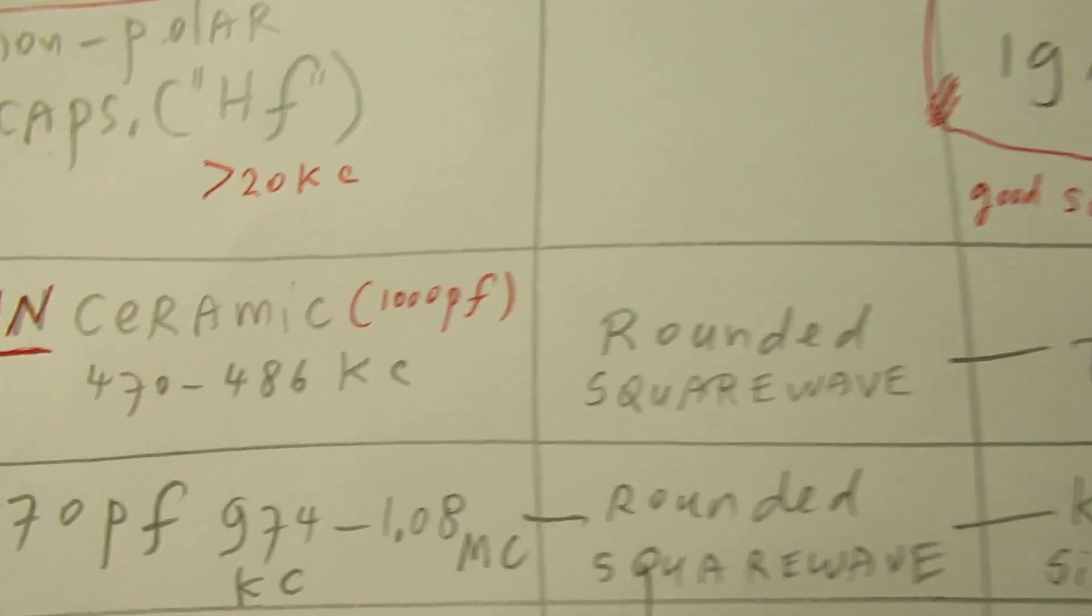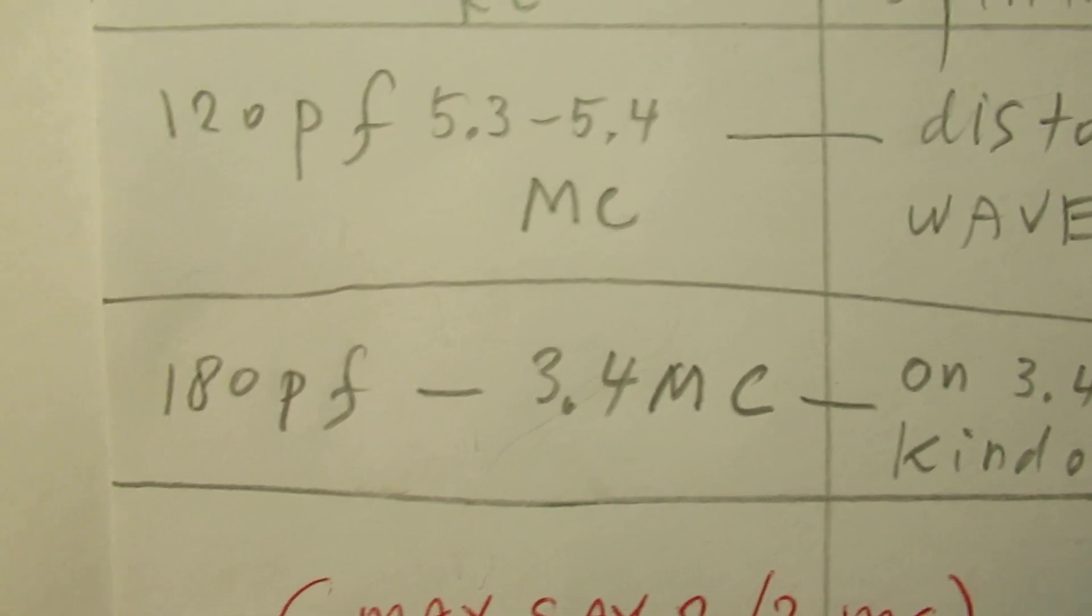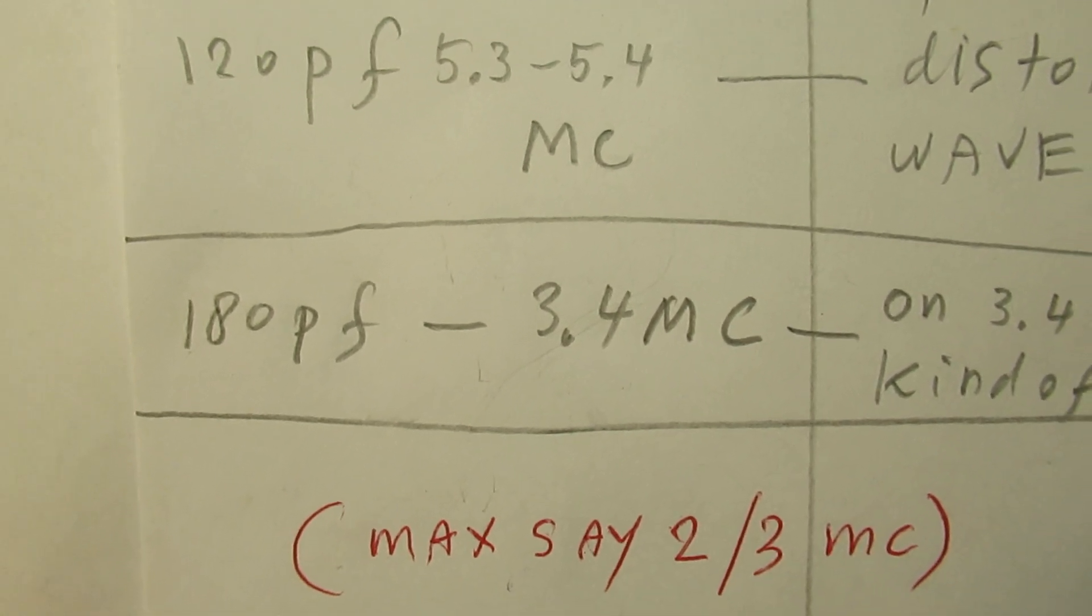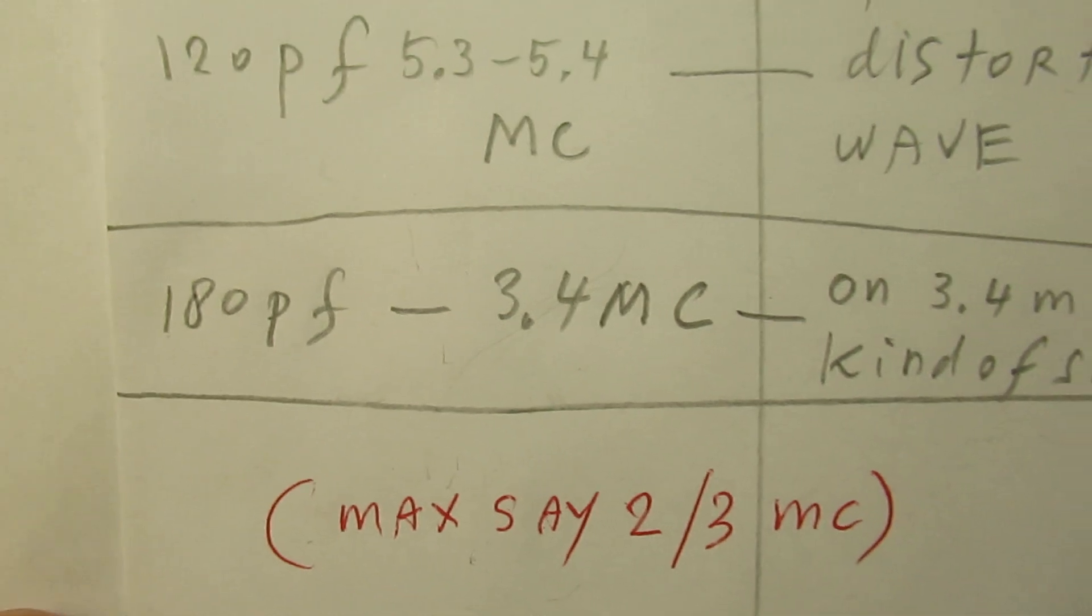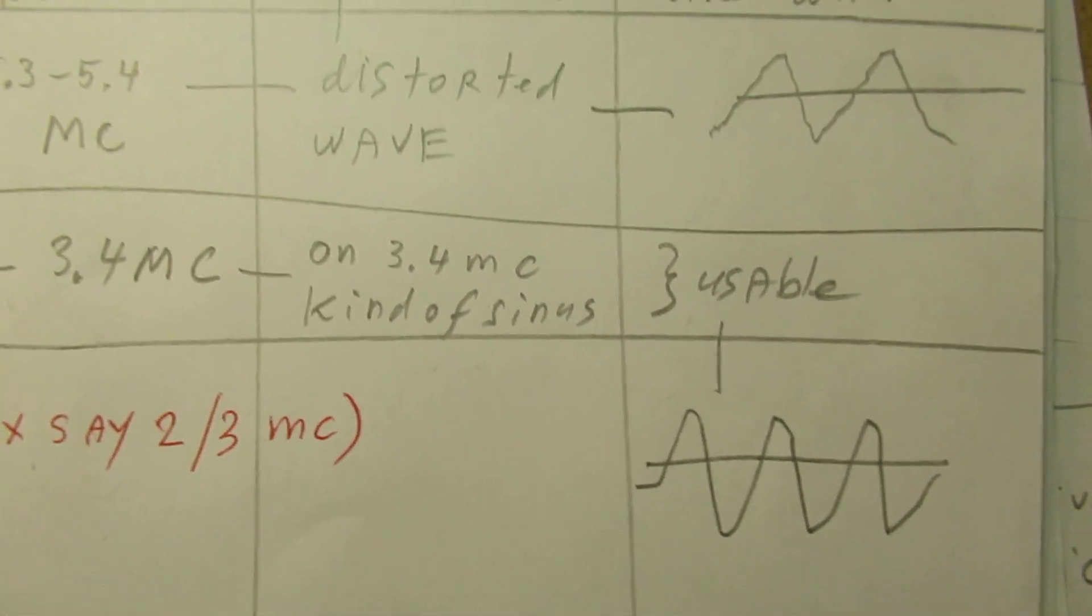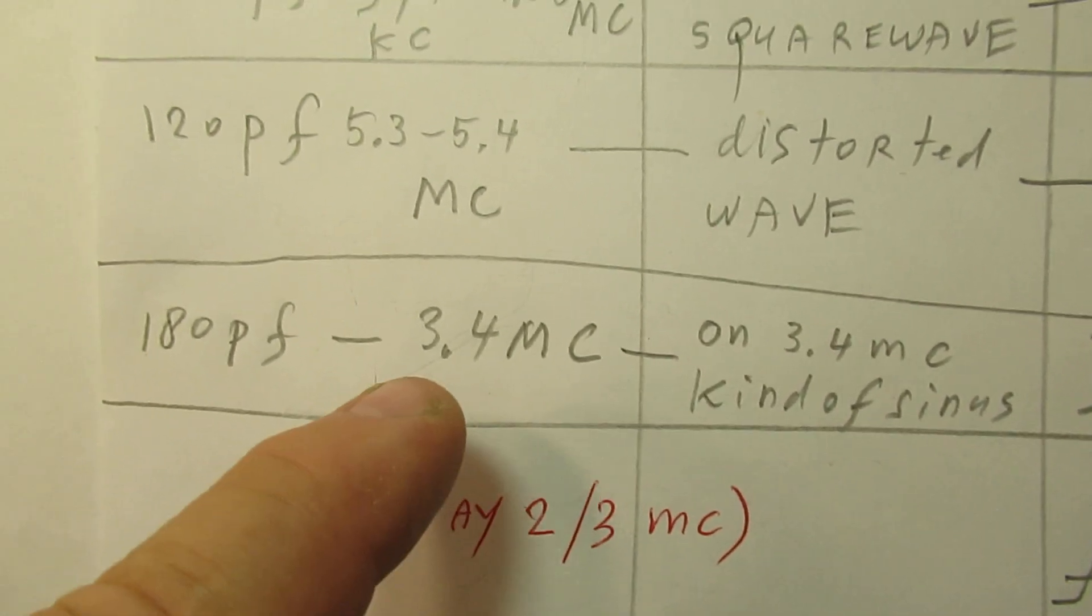Here we are on the highest frequency that the circuit can give - it's 3.4 megacycles. On the very high frequency, in the order of three megacycles...